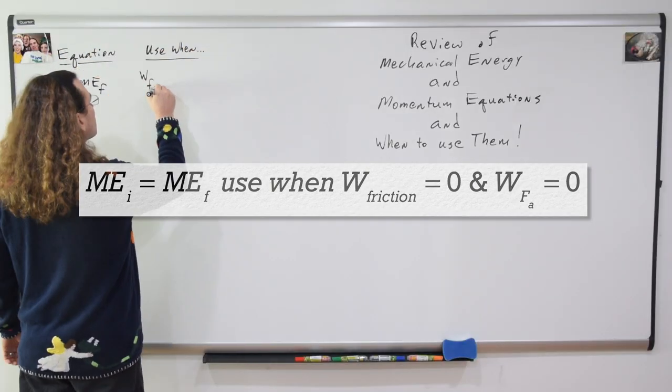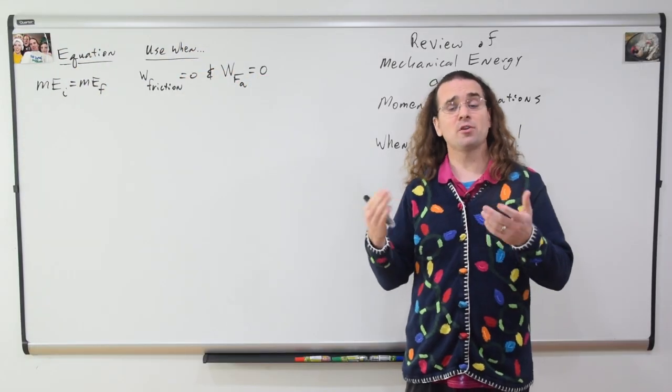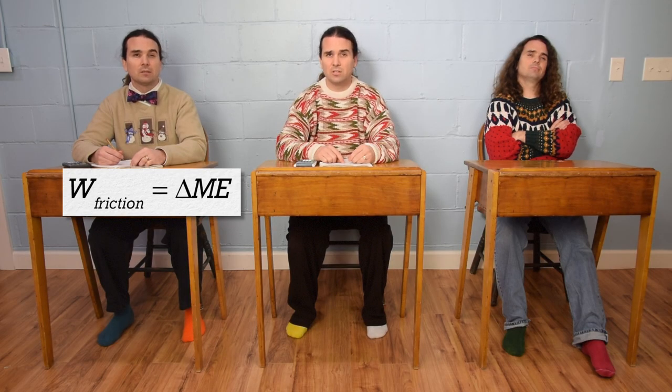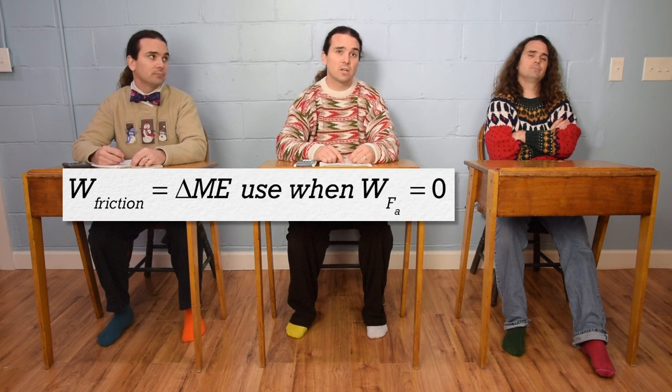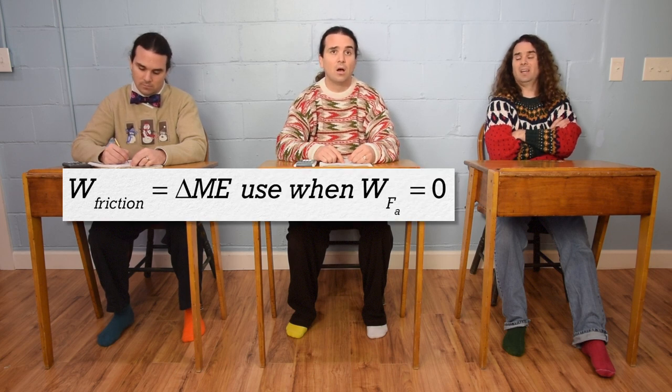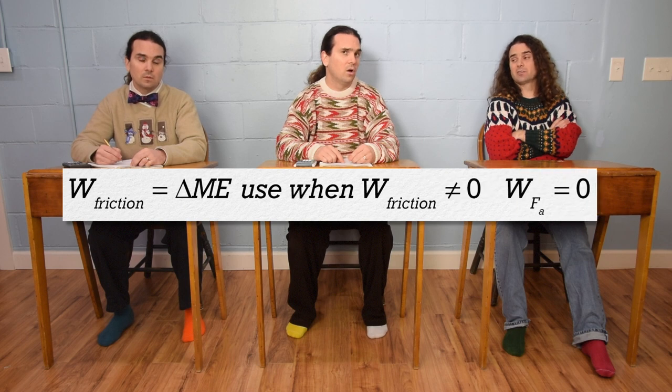And Bobby, another mechanical energy equation, please. Work done by friction equals the change in the mechanical energy and we can use it when the work done by the force applied is zero. And the work due to friction is not zero.